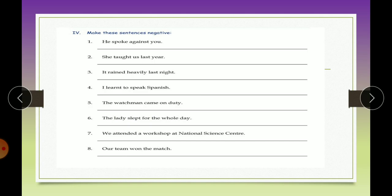We attended a workshop at National Science Center. We did not attend a workshop at National Science Center. Our team won the match. What is the verb? Won. Change it into the first form - win. Aur usse pehle kya lagayenge? Did not. So our team did not win the match. So whenever we are framing negative sentences, if the sentence is given in simple past tense, we will be using did not. And did not will have the first form of the verb. Clear? So rewrite these sentences in the space provided below.